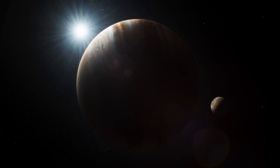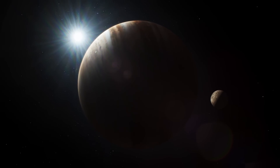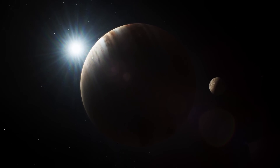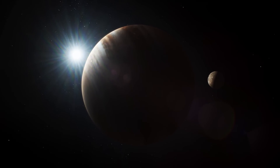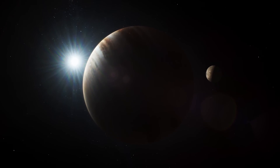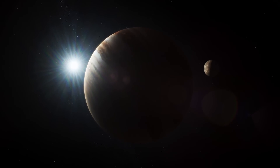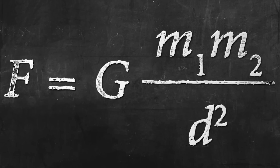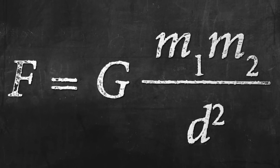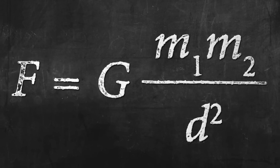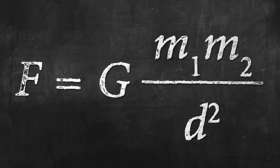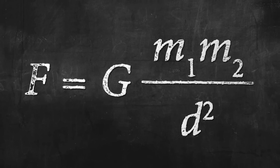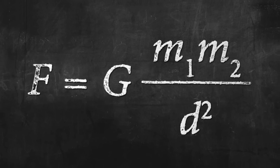One of the emergent properties of mass is gravity, as described by Newton's equation. The mathematical formula for gravitational force is displayed here. The more mass an object has, the greater its gravitational pull, multiplied by the constant G.